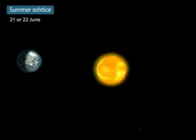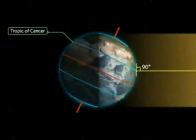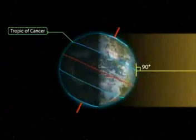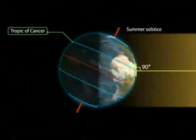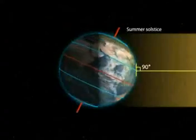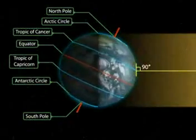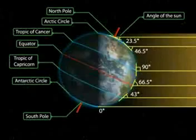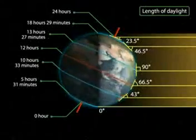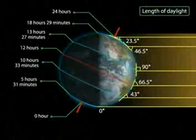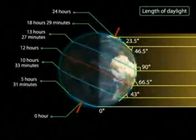Summer Solstice: On the 21st or 22nd of June, the overhead sun is over the Tropic of Cancer. It receives the largest amount of solar radiation. At this time, the northern hemisphere is in the summer solstice, while the southern hemisphere is in the winter solstice. The angle of the sun decreases towards the poles. On this day, the length of daytime in the northern hemisphere is the longest in the year, while that of the southern hemisphere is the shortest in the year.